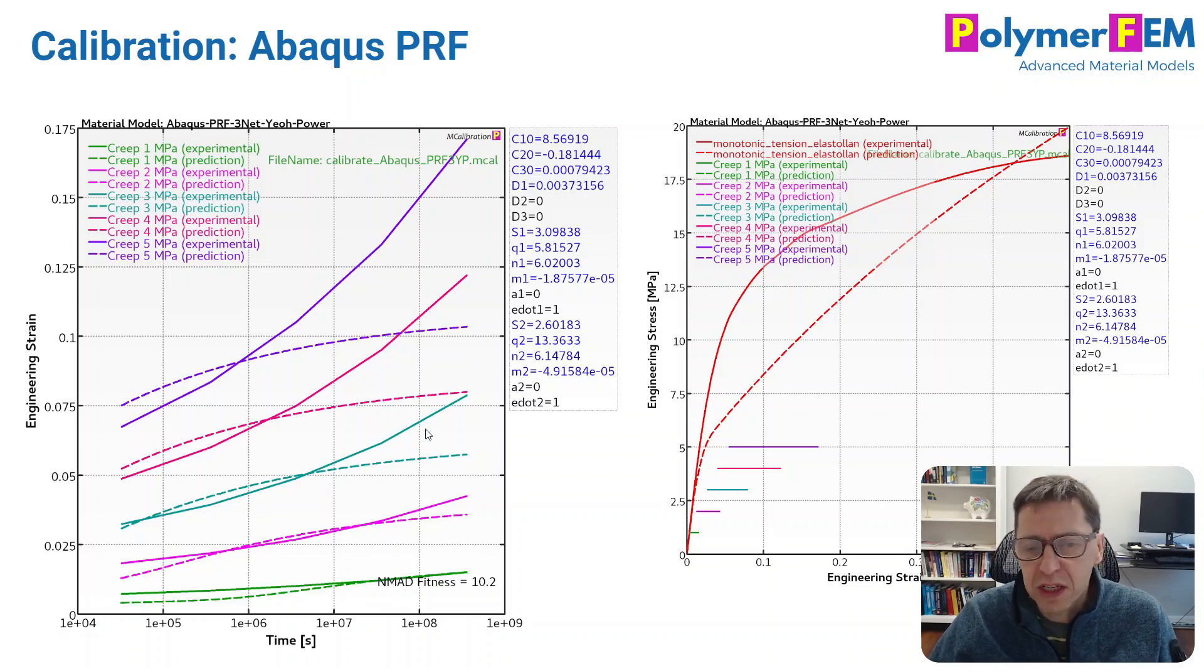And it doesn't look so good either. The creep response does not follow what we see experimentally. Average error is 11.7%. I still don't like it. It's not that great.